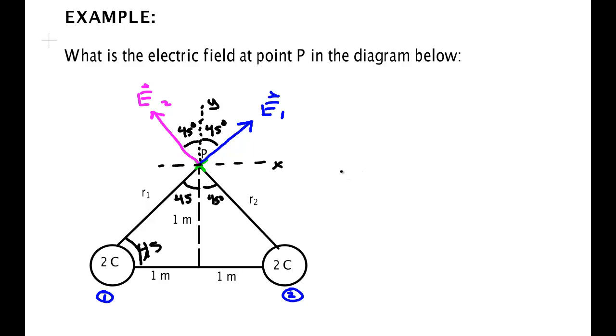I can find the length of either one of them and they turn out to be the same. E2 is equal to E1 in this case. And it's 9 times 10 to the 9th newton meters squared per coulomb squared times the charge. The charge is 2 coulombs divided by the distance. Now the distance, whether you call it R2 or R1, is the same. Notice we want the square of the distance. That's the square of the hypotenuse. The square of the hypotenuse is equal to the sum of the squares of the other two sides.